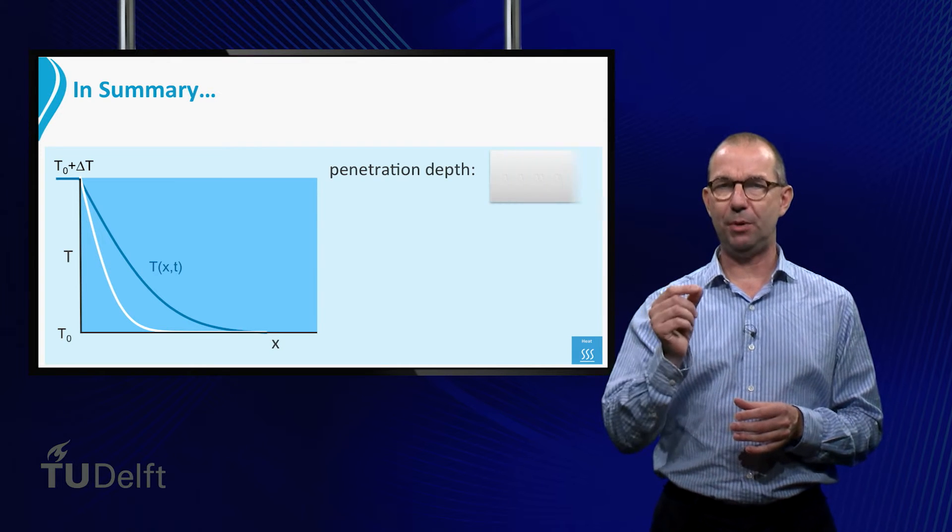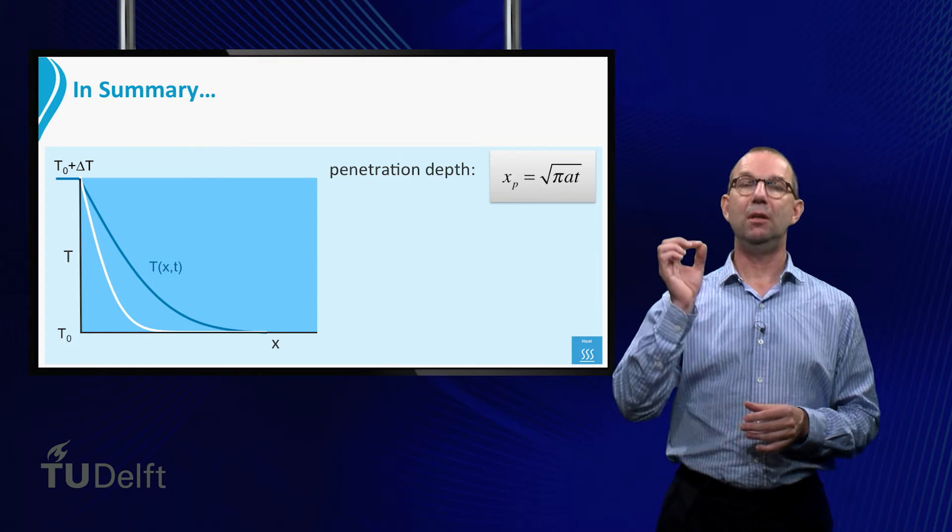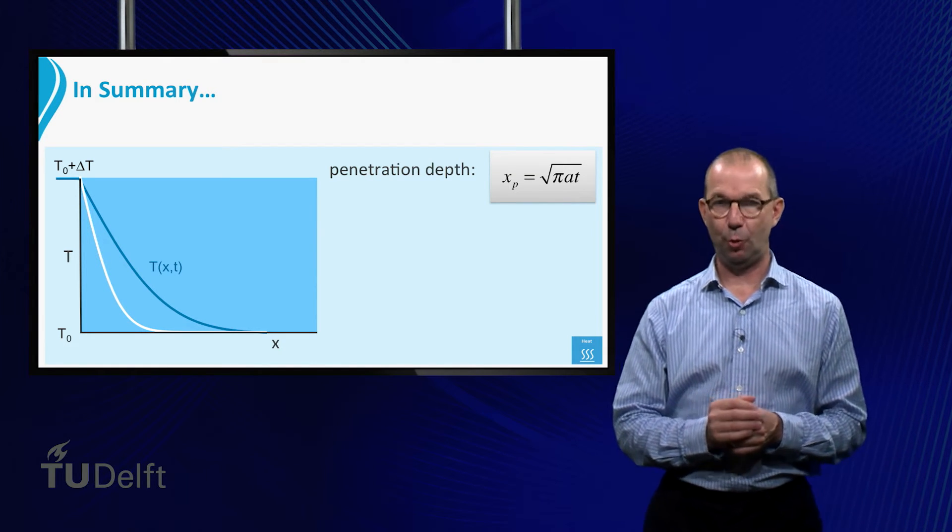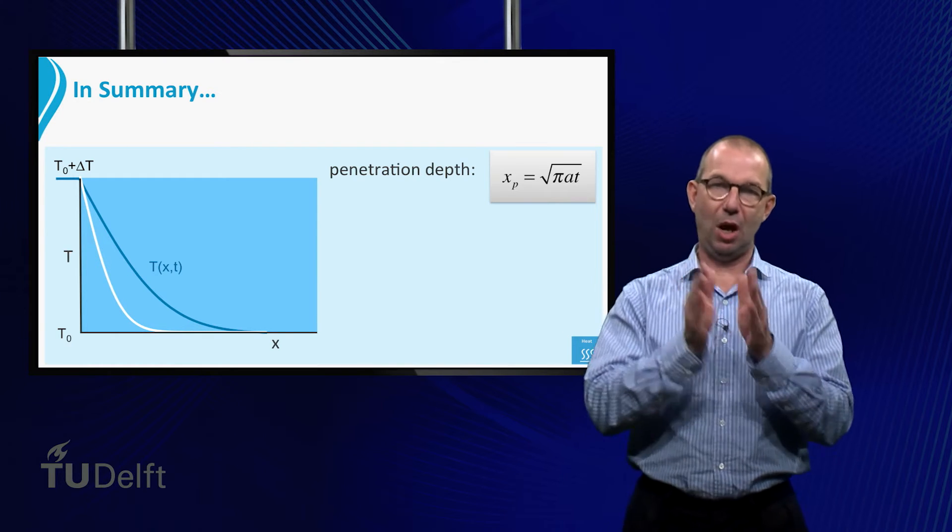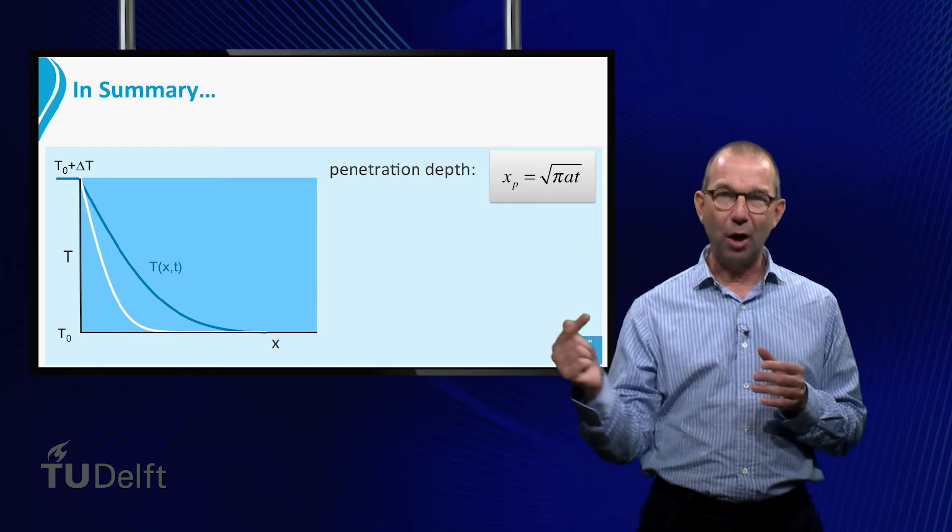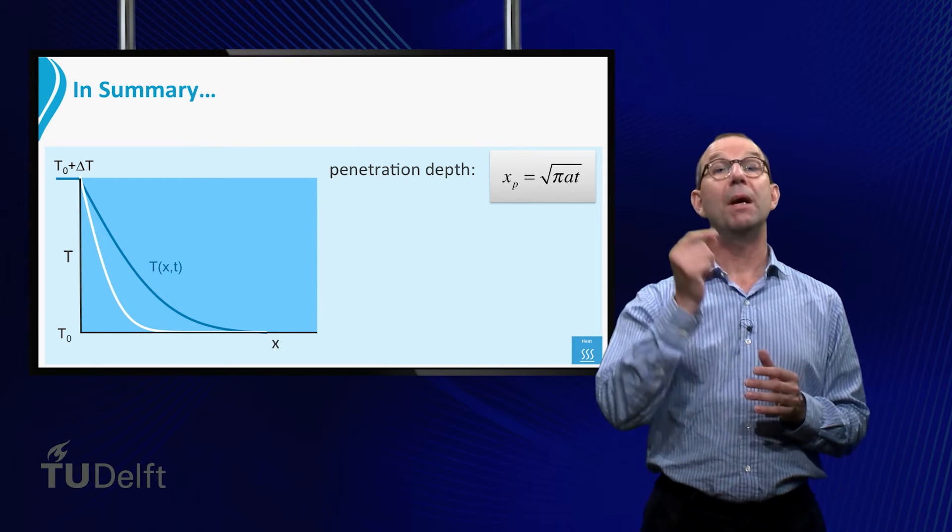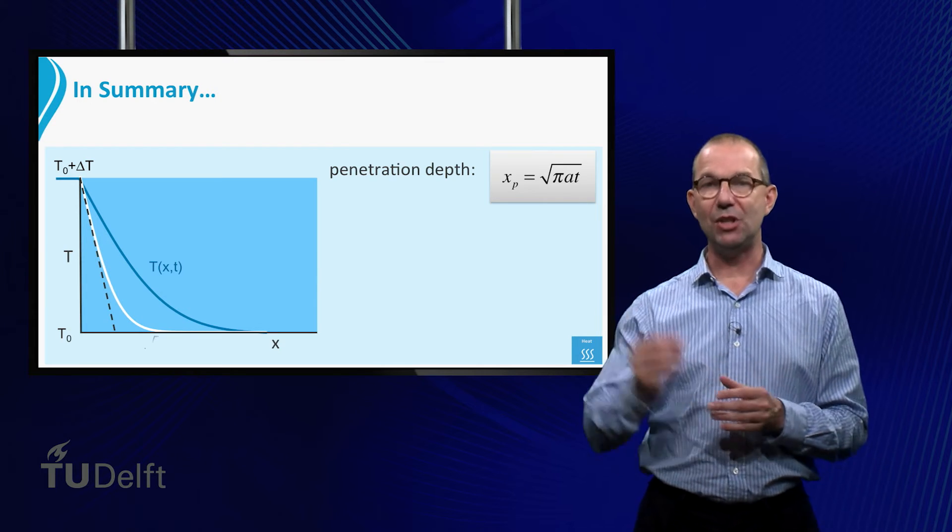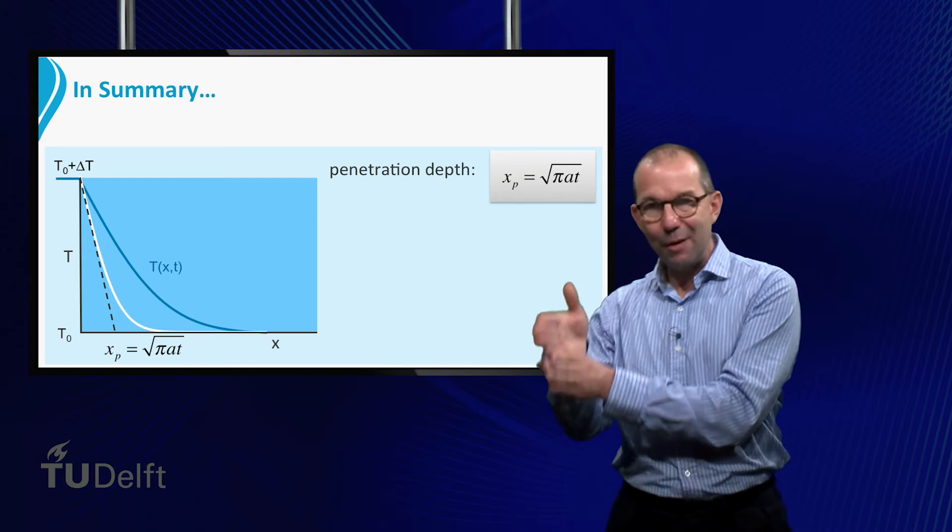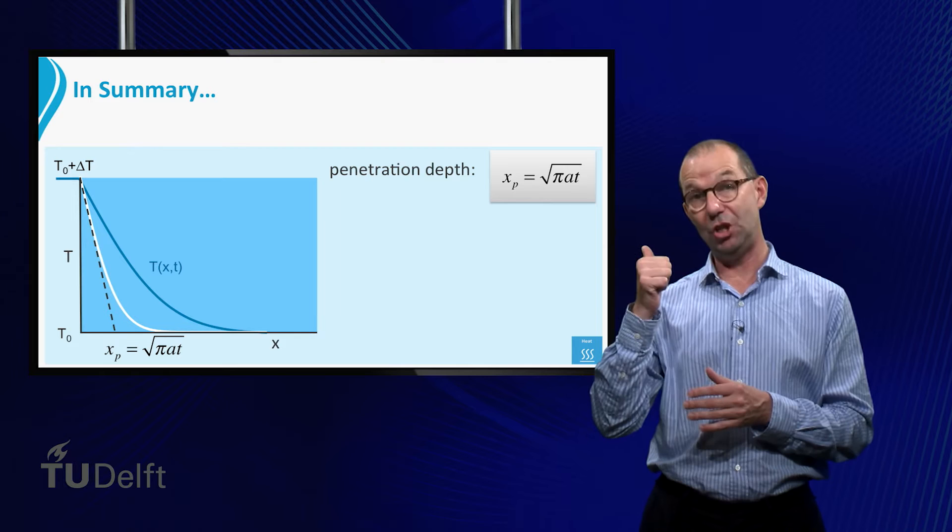How far has the heat penetrated into the plate? That is given by what is called the penetration depth. It is given by the square root of pi times A times T. It tells us how far into the plate roughly the temperature has changed. Mathematically, it is found by taking the tangent to the temperature profile at the left hand side and seeing where it cuts the x-axis, as is shown on the sheet.